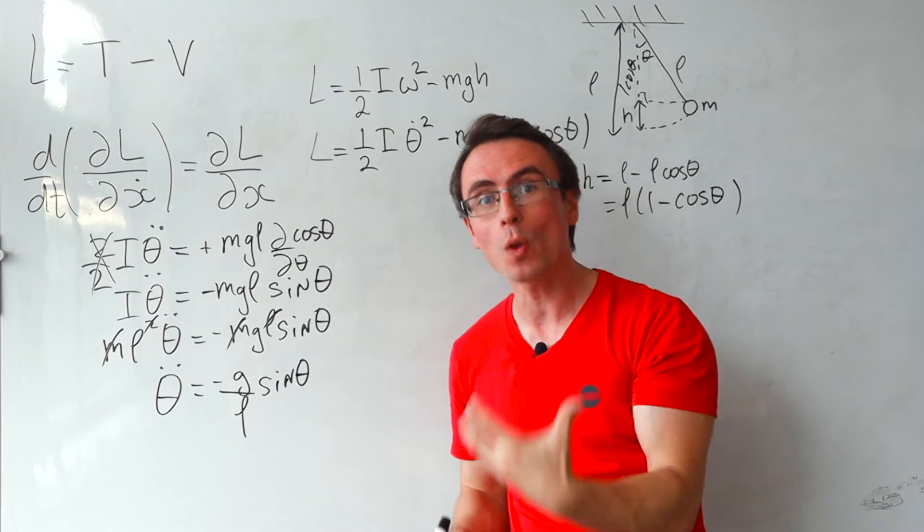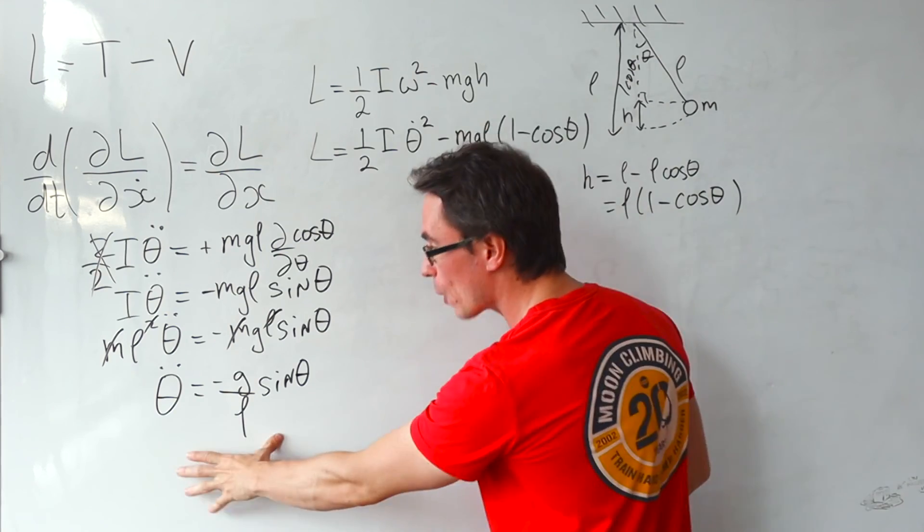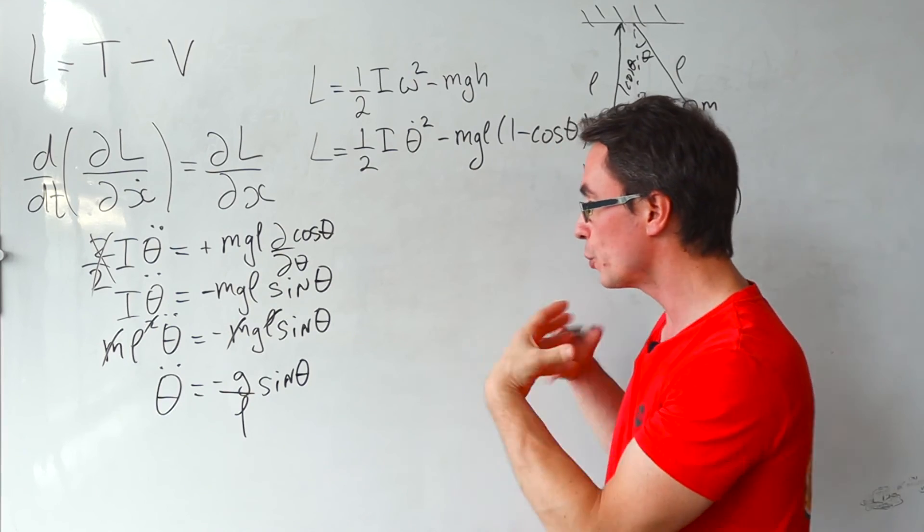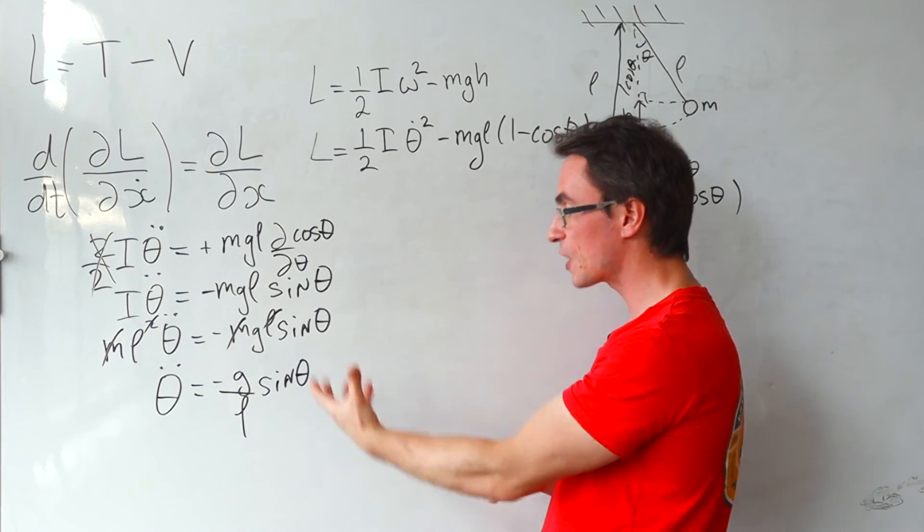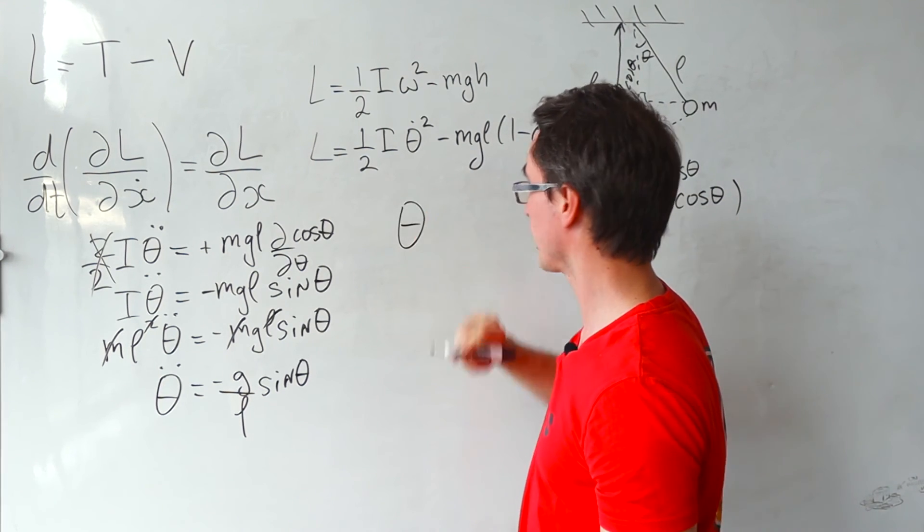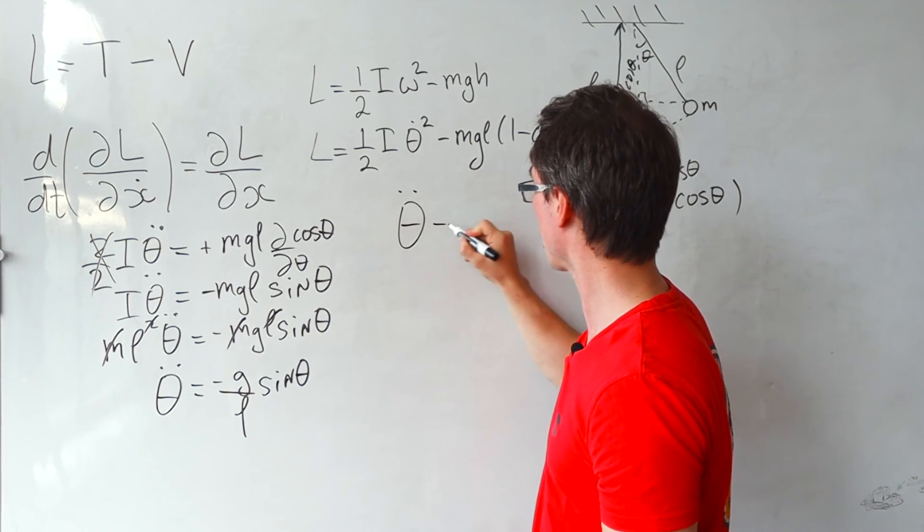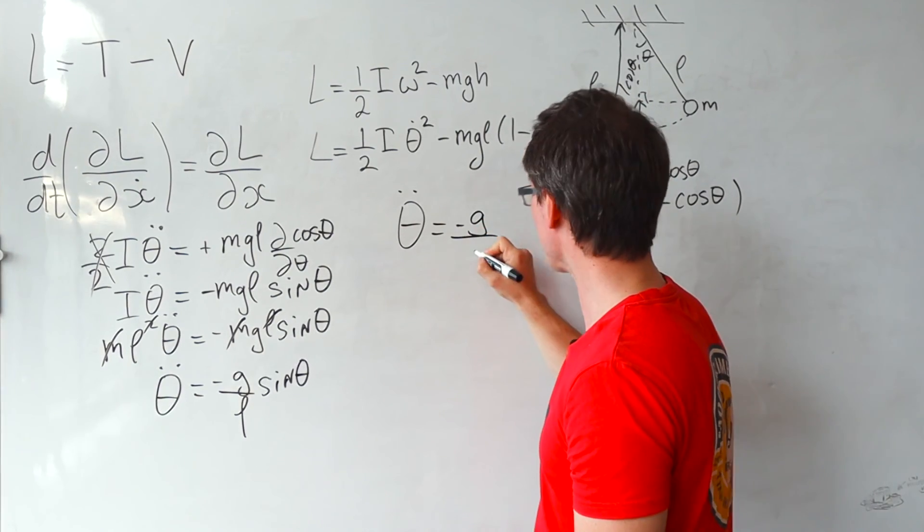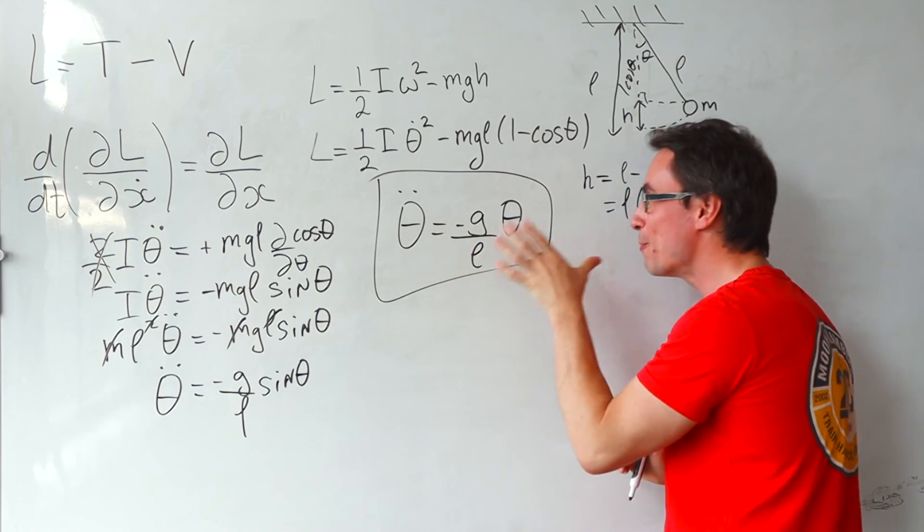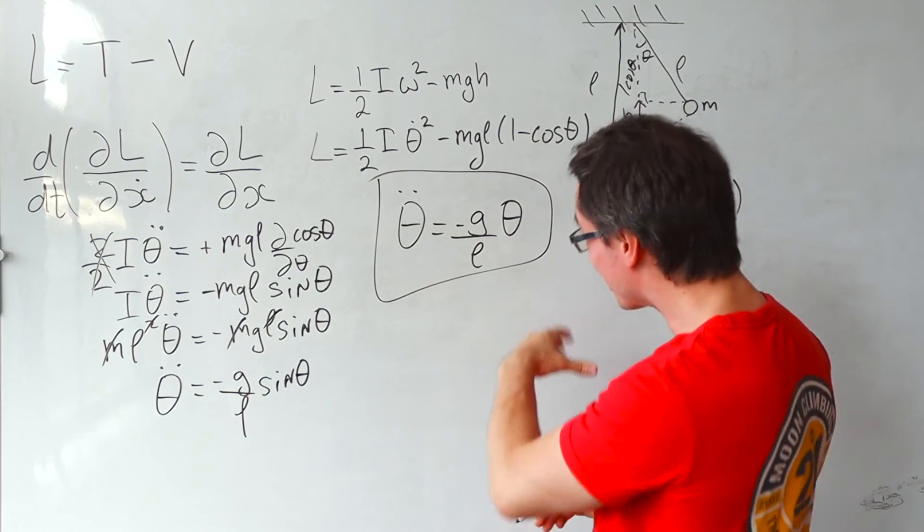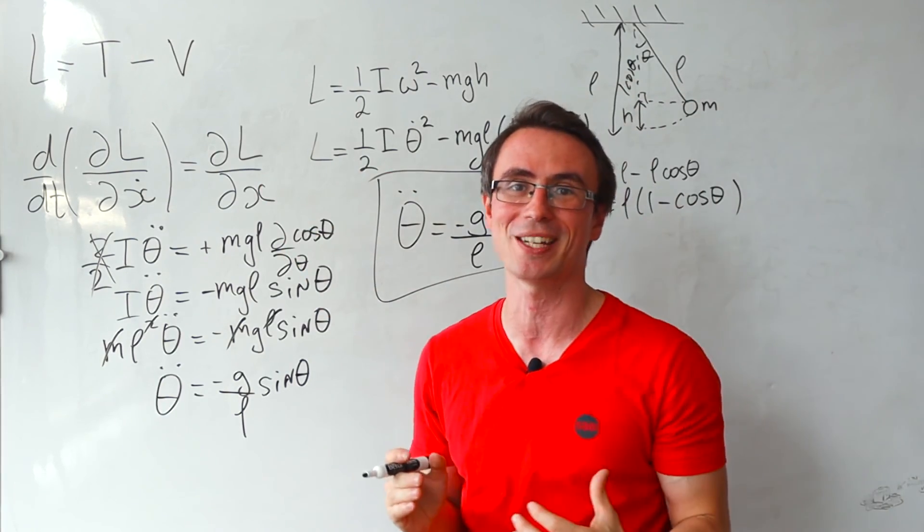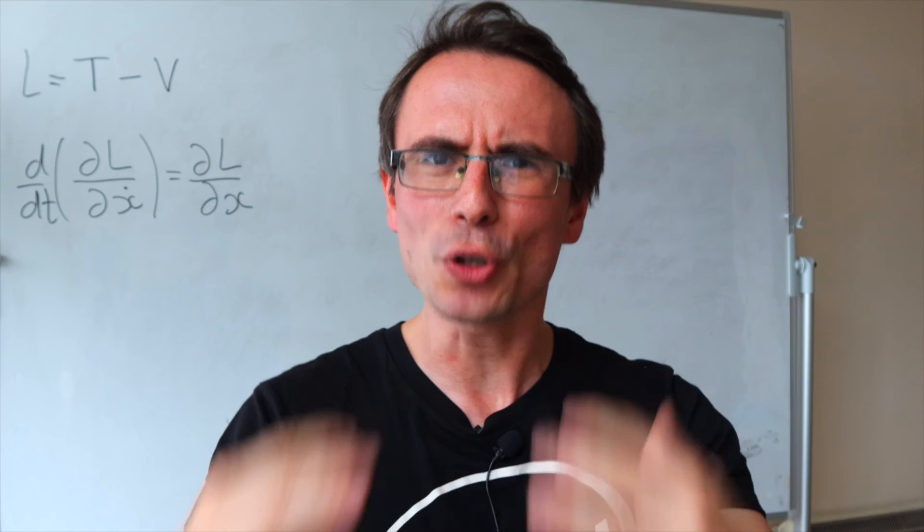Now, a simple pendulum only exhibits periodic motion for the small angle approximation. So using the fact that for small angles, sine of theta is approximately equal to theta, we can write our equation of motion that theta double dot is just minus G over L times theta. And this right here is the equation of motion for a pendulum, re-derived only by a few simple steps plugged into the Euler-Lagrange equation.